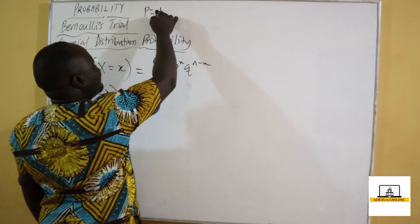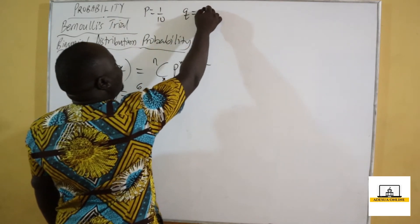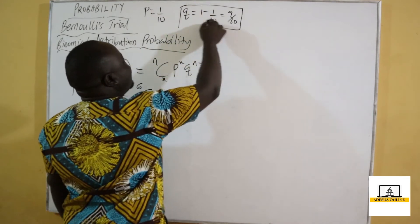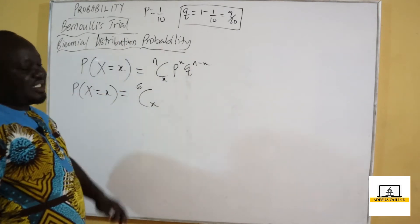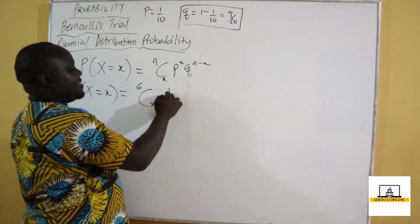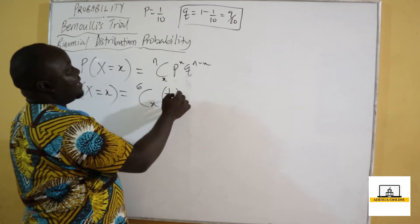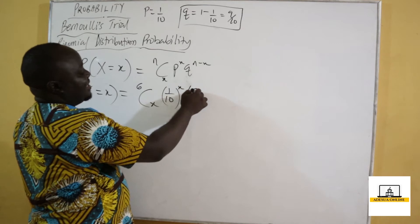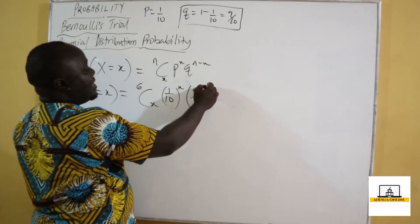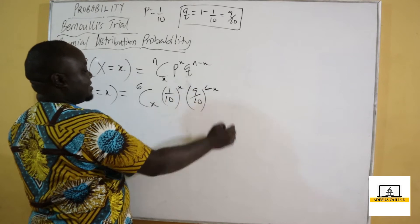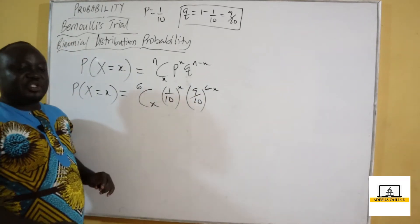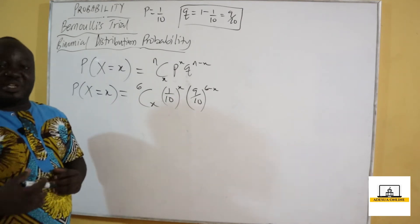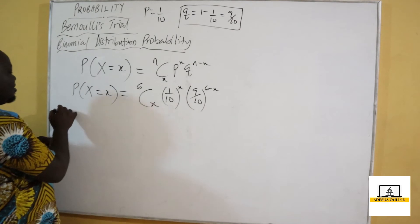So our p is equal to one over ten. Our q will be equal to one minus one over ten, which equals nine over ten — those are the ones which are not defective. So we shall have one tenth raised to the power x, and nine over ten raised to the power six minus x. With this, we are going to find the probability for each part.